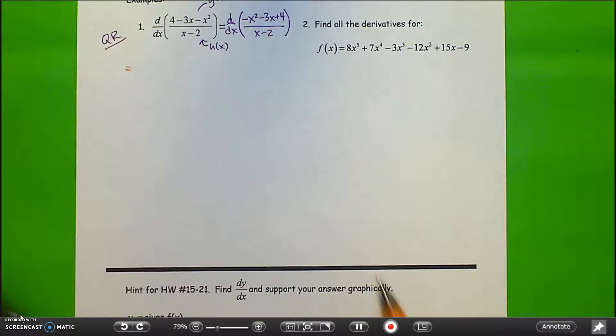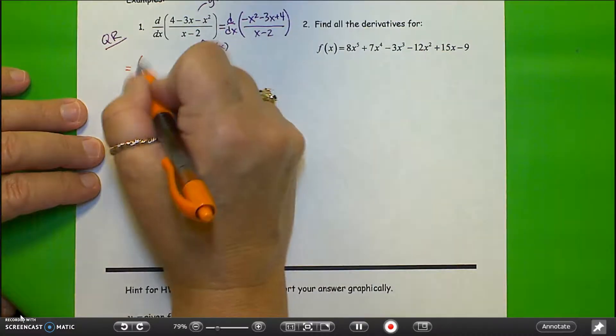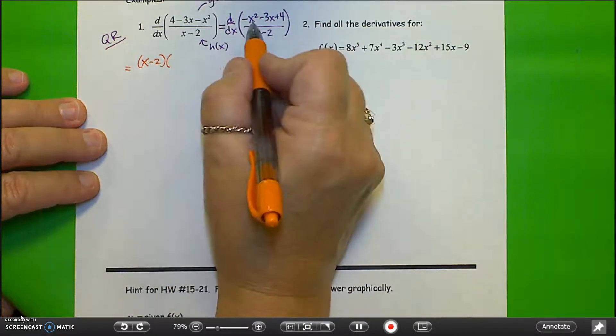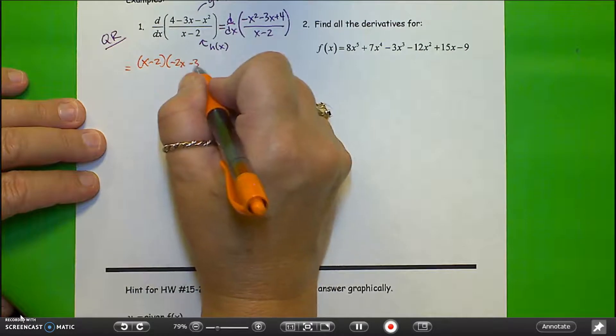Alright, so we'll get the derivative. Quotient rule says always start with the bottom function, so x minus 2, the derivative of the top.